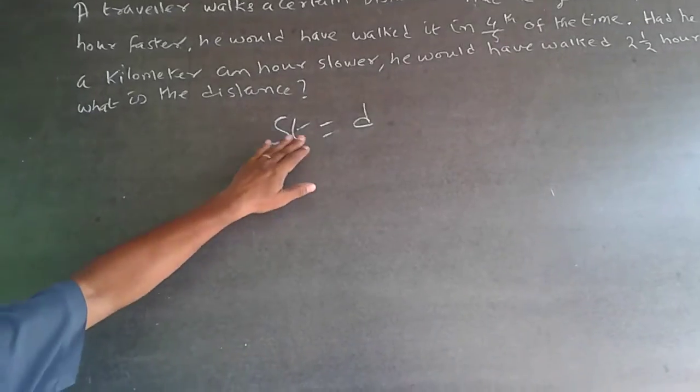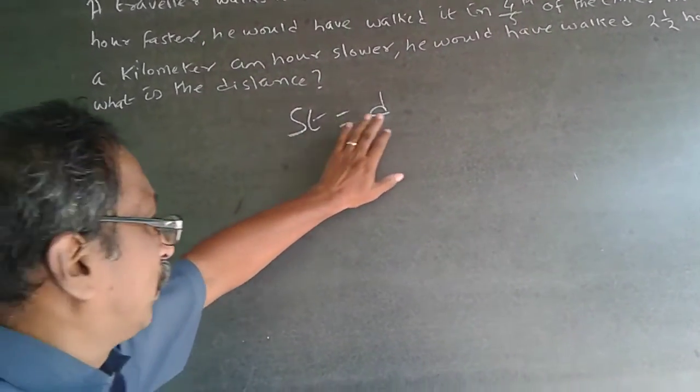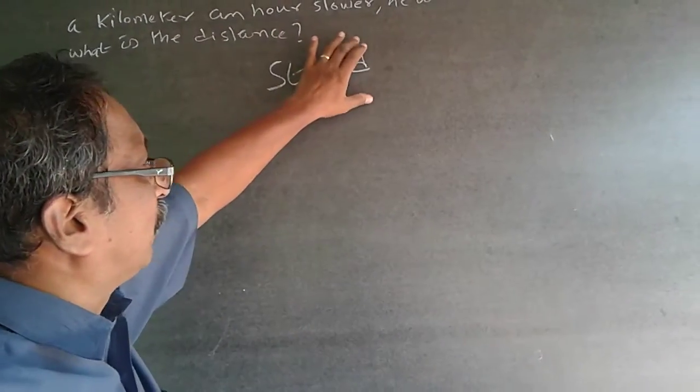What happens is, this is the usual speed and usual time taken. So distance covered is the usual distance covered.